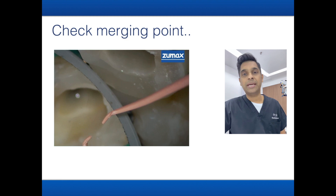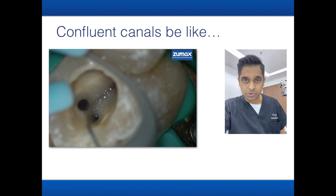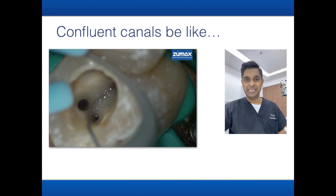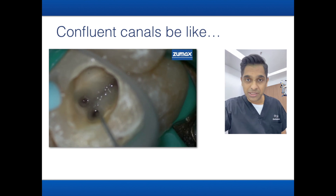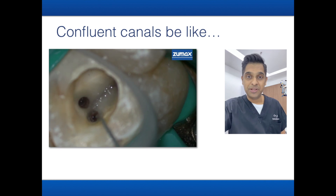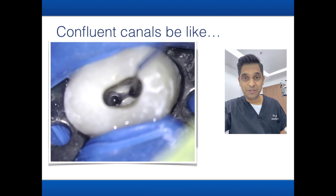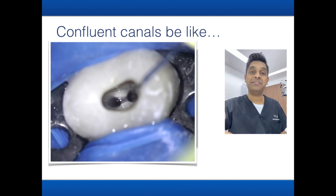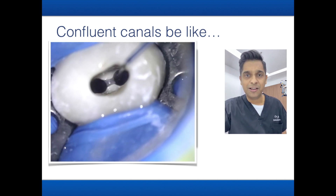During the irrigation protocol, it is quite common to irrigate one canal and find that the irrigant appears in the other canal. Similarly, when you aspirate irrigant from one canal, you may find it is also being aspirated from the other — this is a clear sign that the canal is confluent.